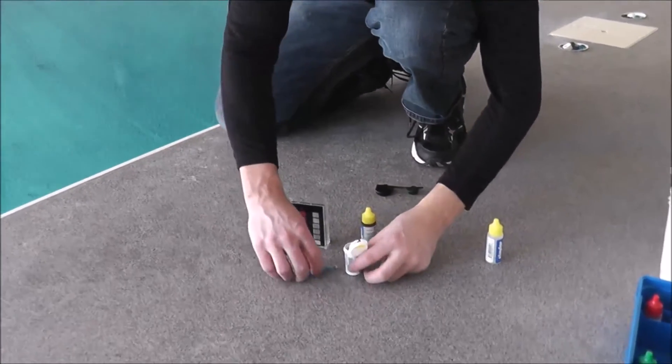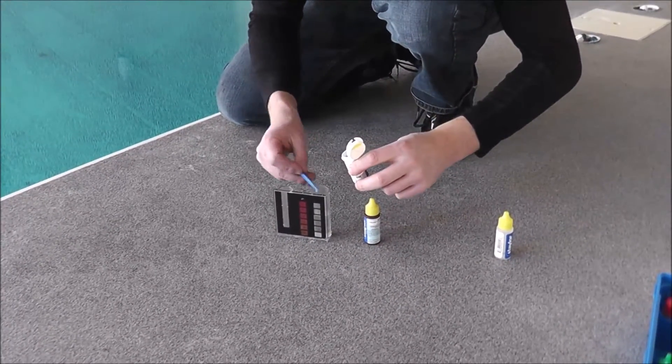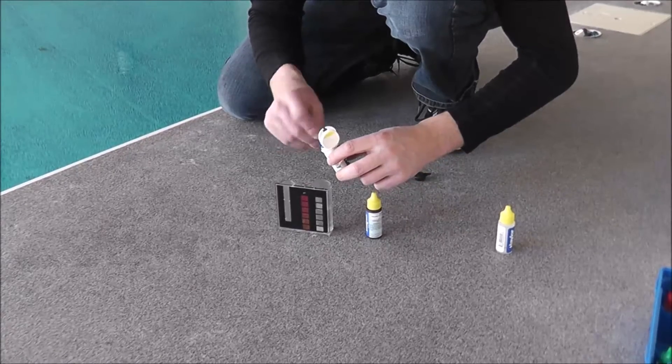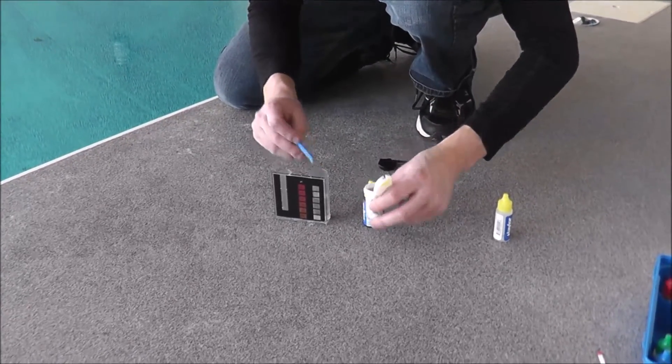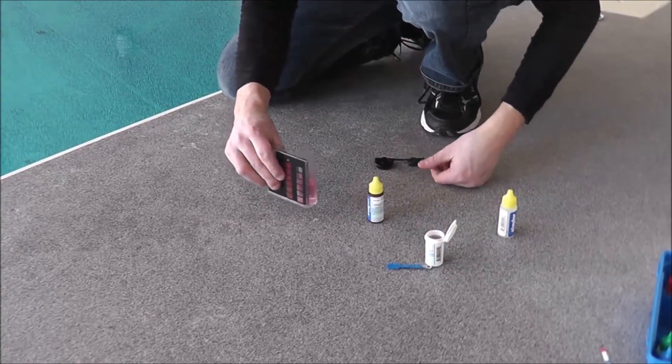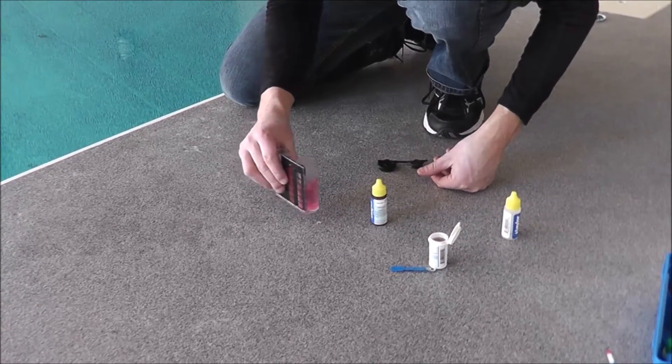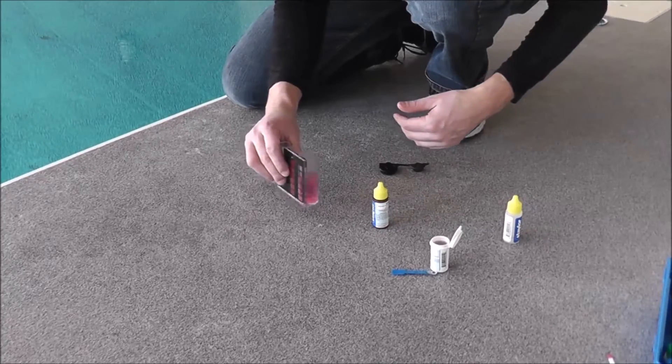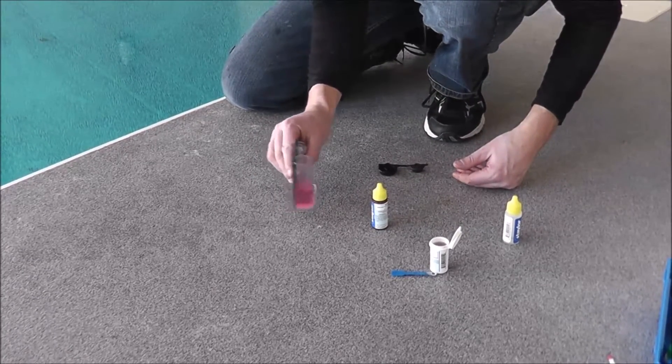We add two dippers of the powder. One, two, and then you swirl it until it's all dissolved. If there's chlorine in your pool, the sample will turn pink. You can see that it already has turned pink.